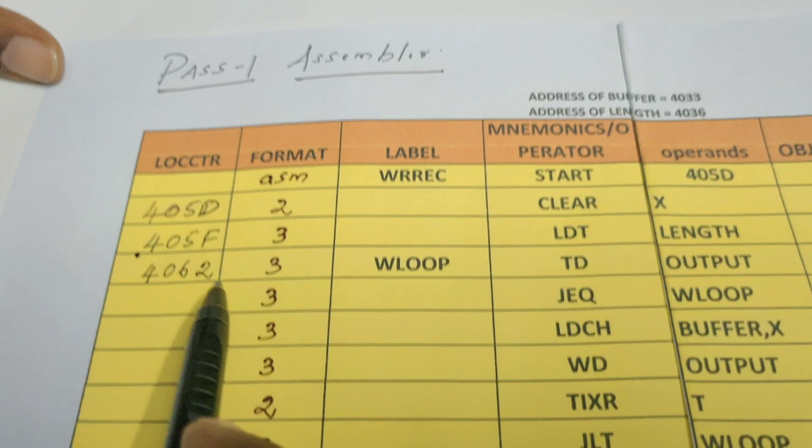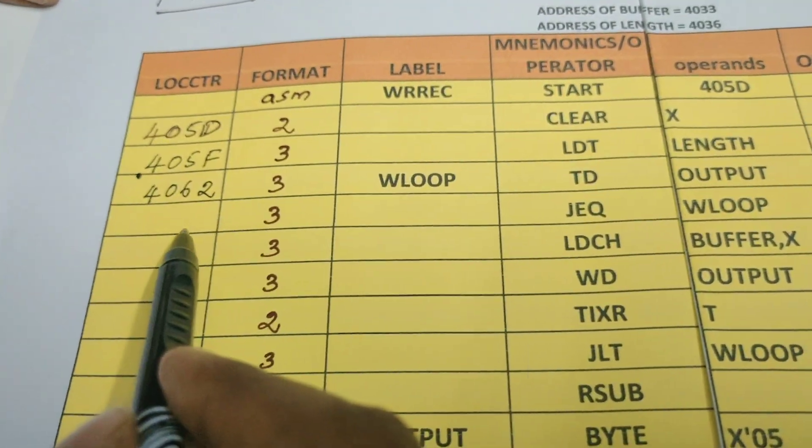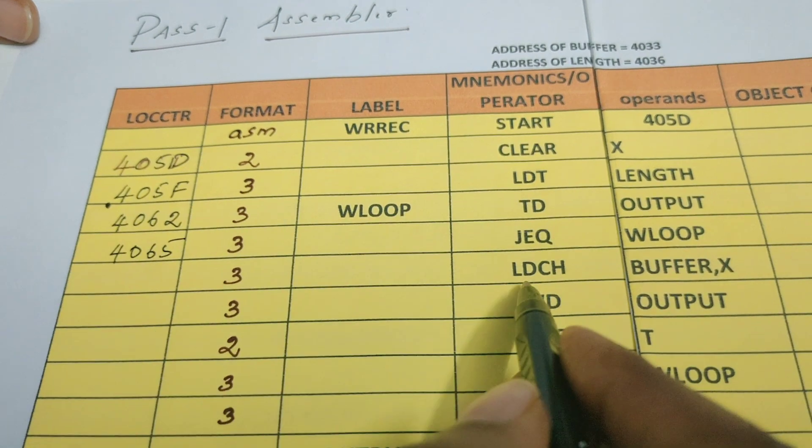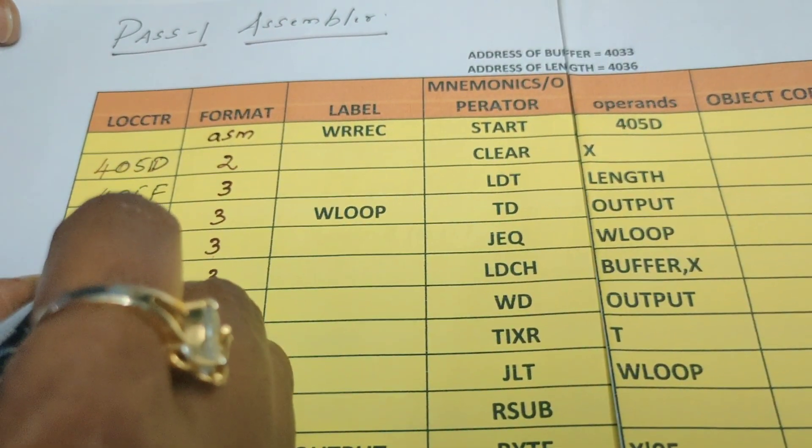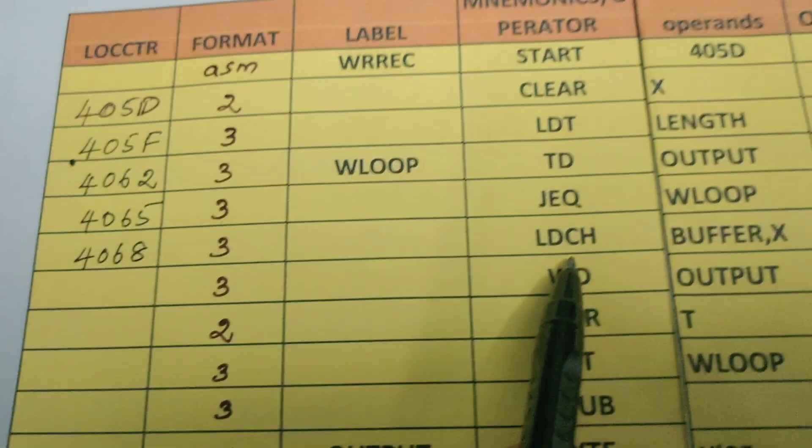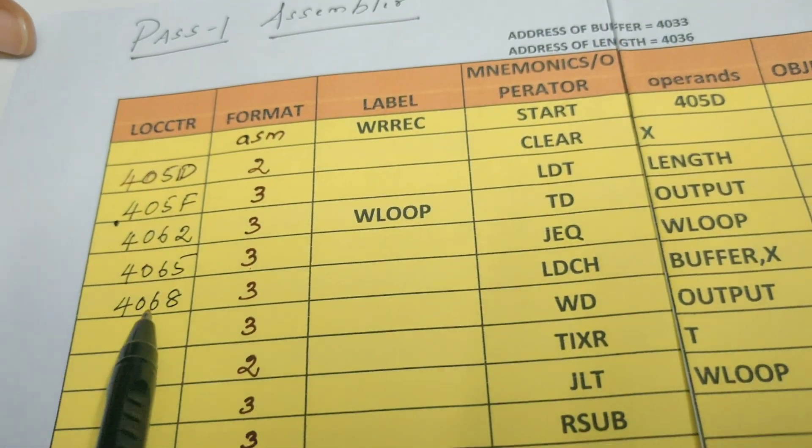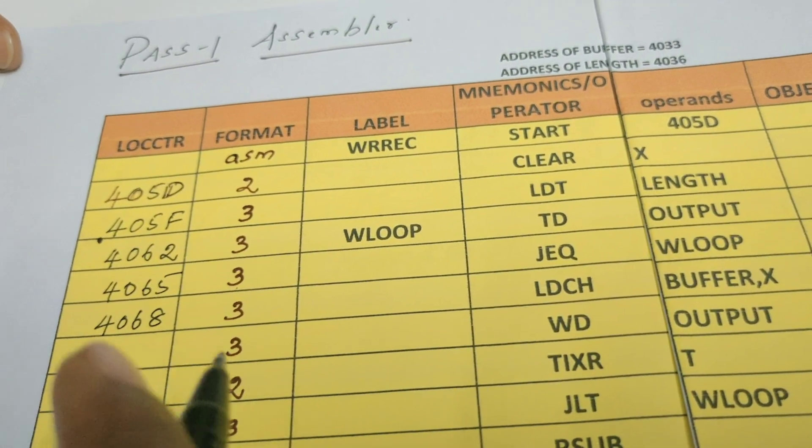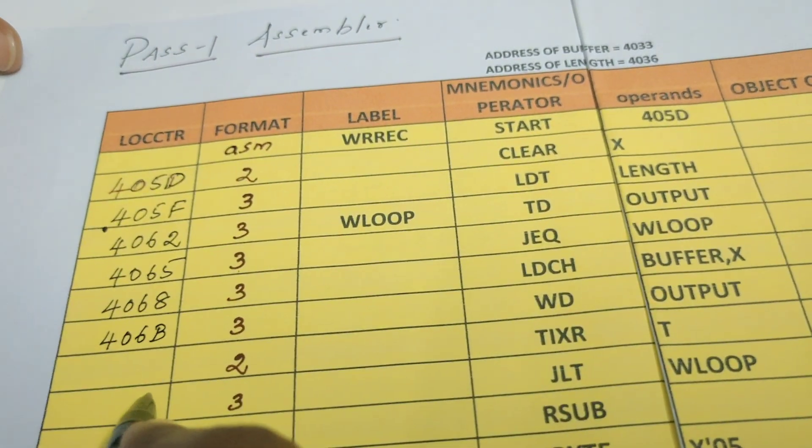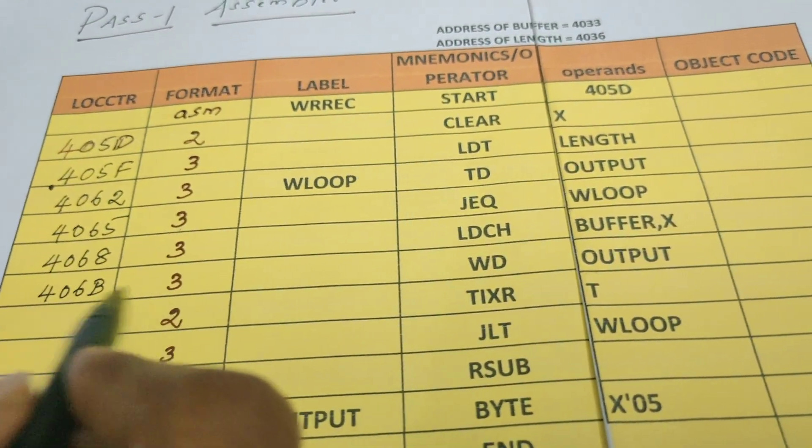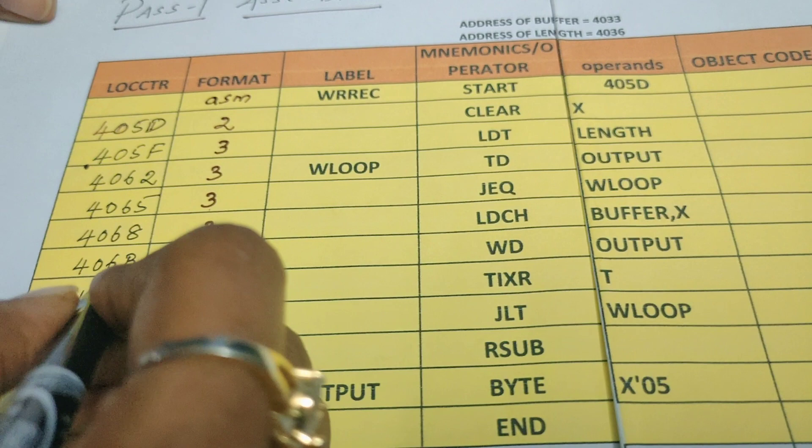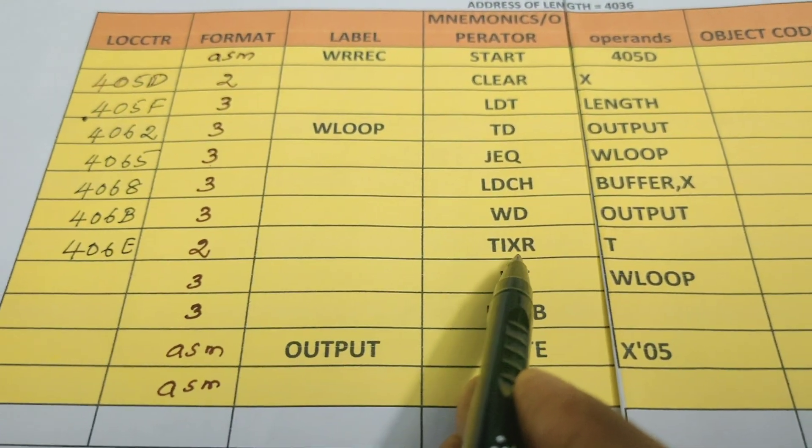To find the address of the next instruction, 3 bytes must be added to this, so that we will be getting 4065. Similarly to find the address of LDCH, we should add 3 bytes with this, so we would be getting 4068. LDCH instruction is also of 3 bytes. Its starting address is 4068. Further it occupies 3 bytes, so 4068 plus 3 is 406B. To find the address of the next instruction, 406B plus 3 is 406E. The length of this instruction is 2 bytes.